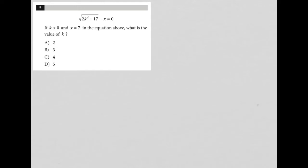This question states: the square root of 2k squared plus 17 minus x equals 0. It then says if k is greater than 0 and x equals 7, in the equation above, what is the value of k?